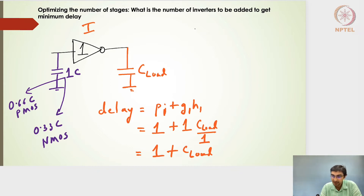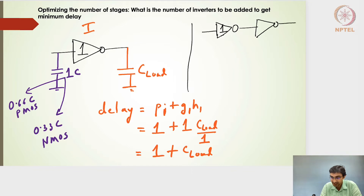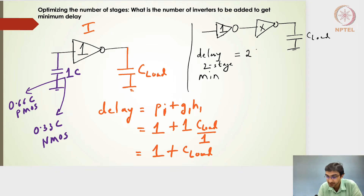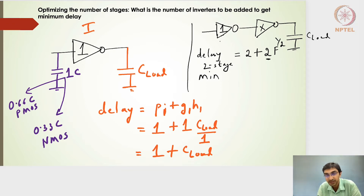Now consider two inverters: the first stage has size 1, the second stage has size X, followed by C_load. The minimum delay for two stages is the sum of parasitics (1+1 = 2) plus two times the individual stage effort, which equals 2 + 2·F^(1/2). Each stage sees an equal stage effort of F^(1/2).